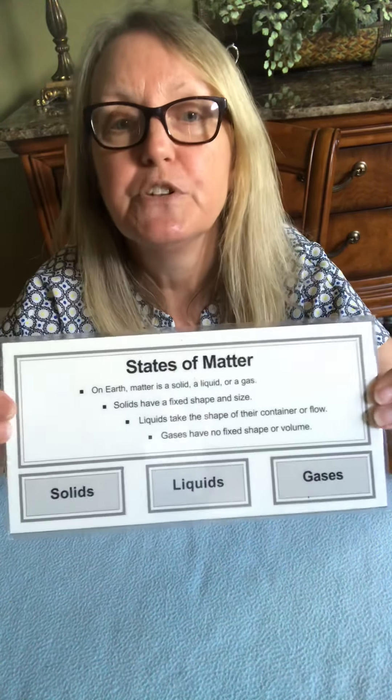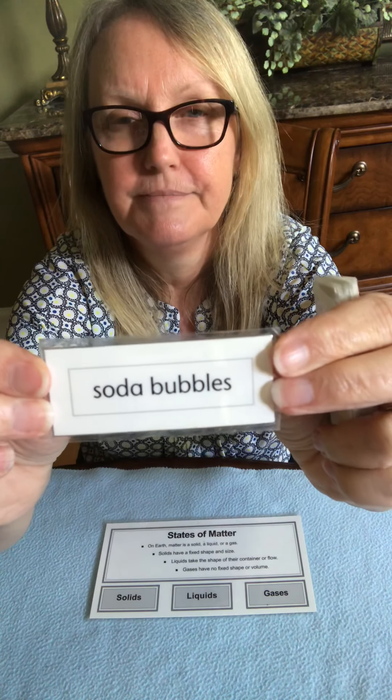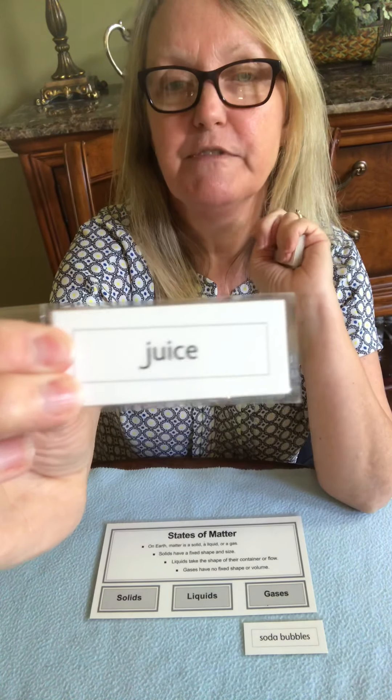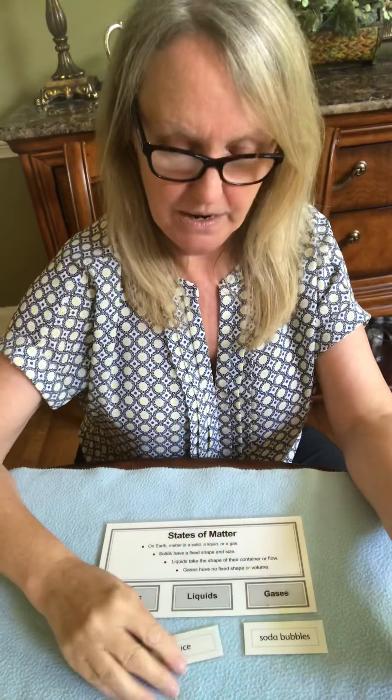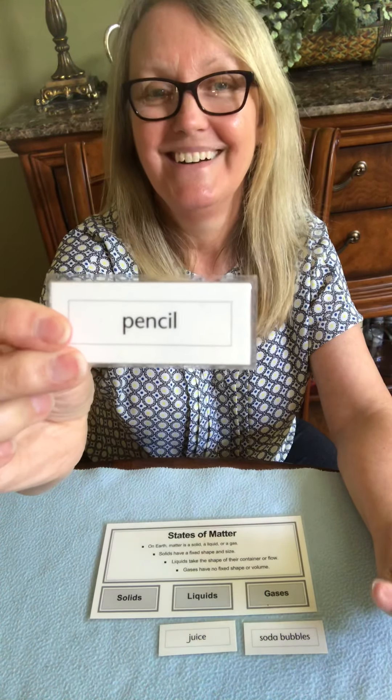I'm going to put this sorting card down and ask you to help me sort these cards. Soda bubbles — solid, liquid, or gas? Gas! Let's put it there. Juice — can juice flow? Does it take the shape of your cup? It does, so it's a liquid. A pencil — does it have a shape? It does, it's a solid. Pencils break sometimes when we put too much pressure on them.